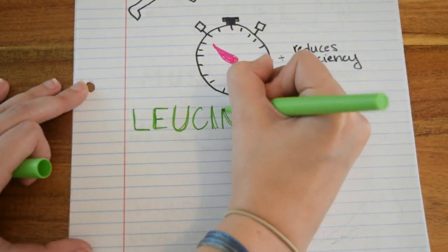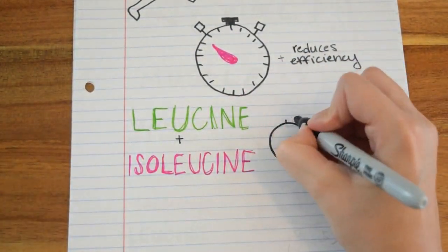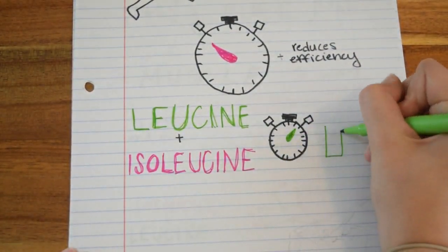Getting enough leucine and isoleucine can help speed muscle recovery, allowing you to work out more often with higher intensity.